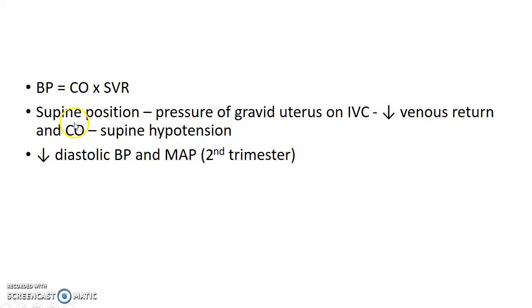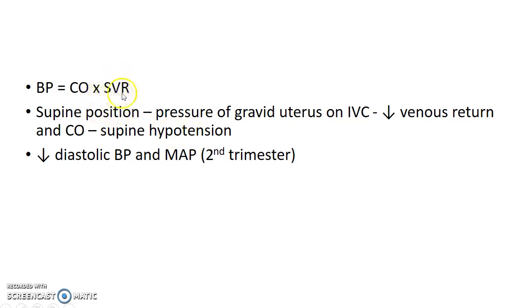Remember, blood pressure equals cardiac output multiplied by systemic vascular resistance. In the supine position, the gravid uterus exerts pressure on the inferior vena cava. This causes decreased venous return and decreased cardiac output, so the blood pressure falls — this is called supine hypotension. The systemic vascular resistance also falls due to dilatation of vessels, causing a decrease in diastolic blood pressure and mean arterial pressure by about 10 mmHg. This is evident in the second trimester.